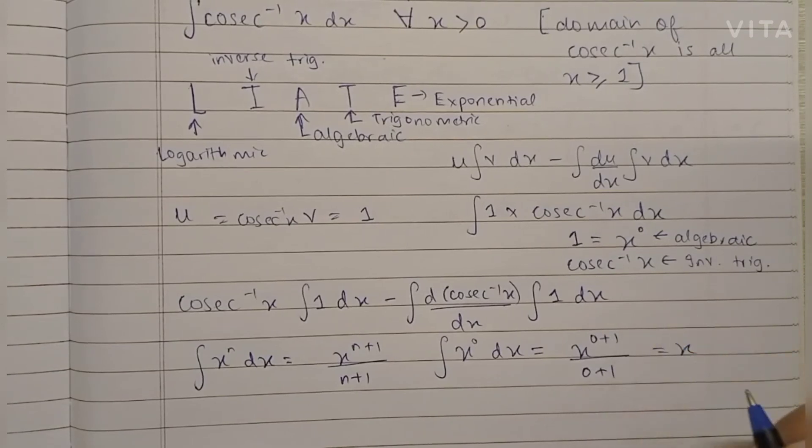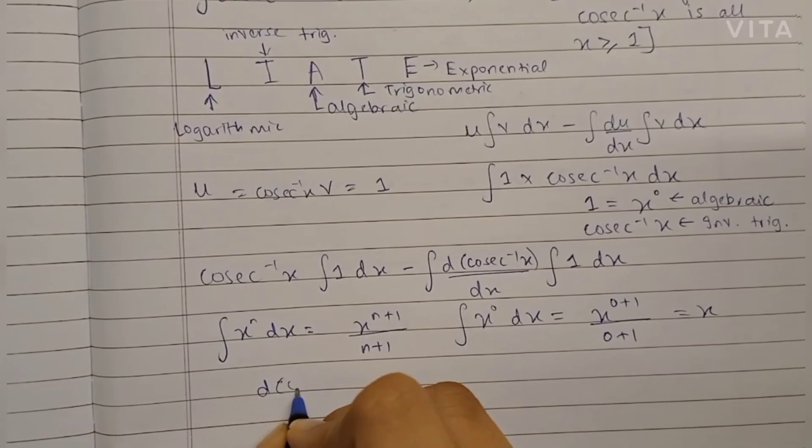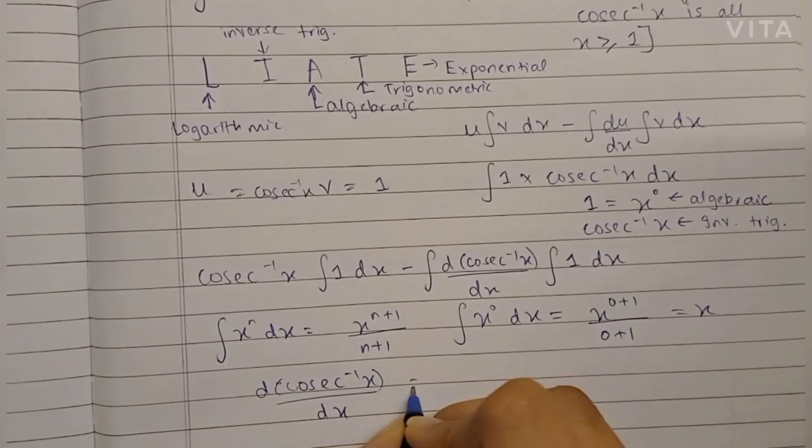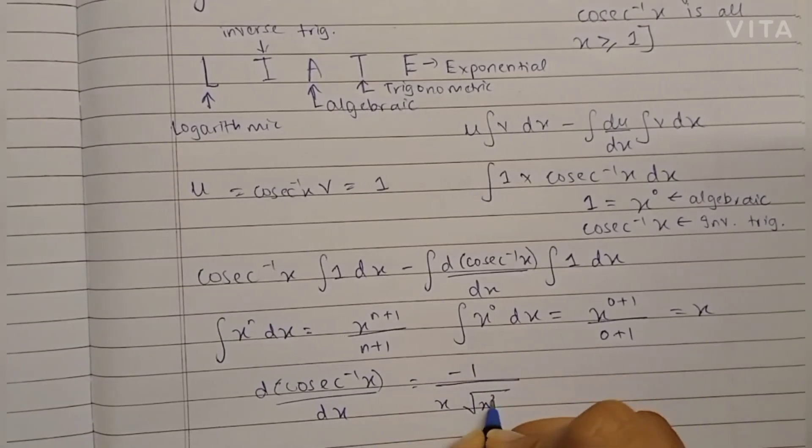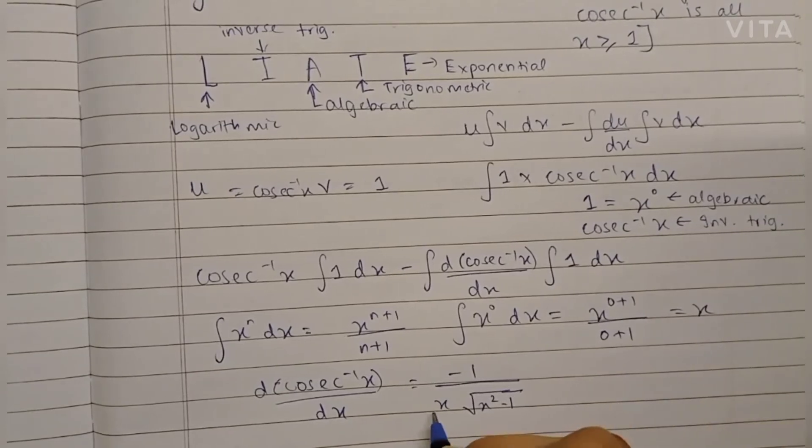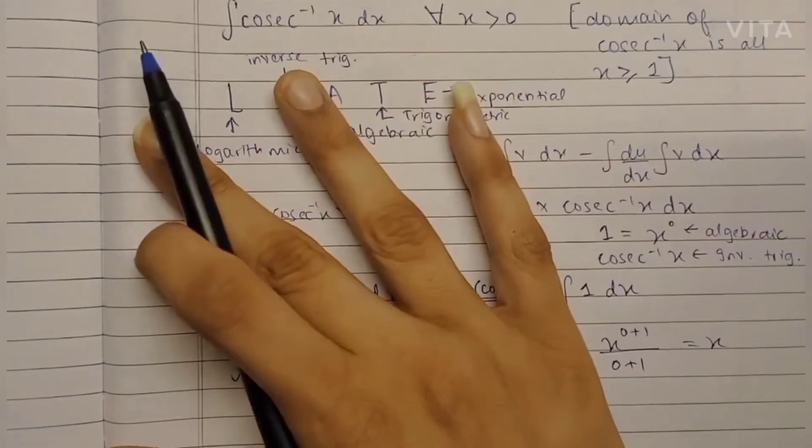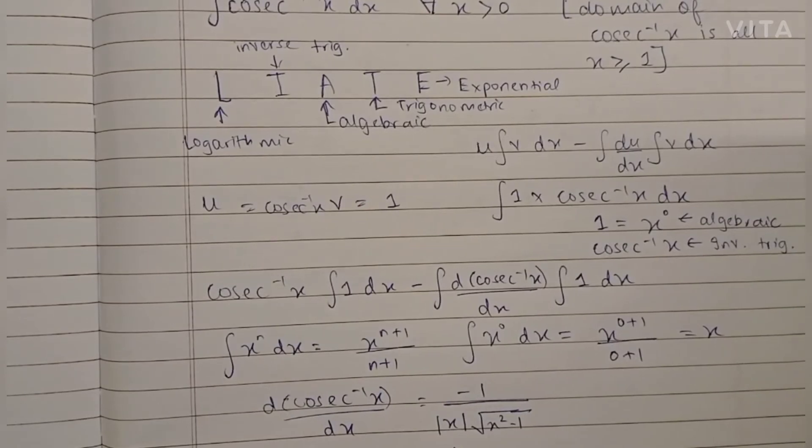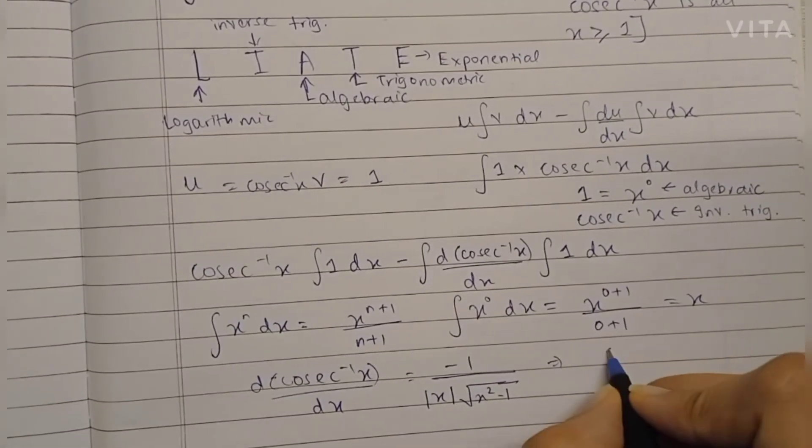Now the differentiation of cosec⁻¹(x) is minus 1 upon x√(x² - 1). Ideally we are supposed to have a mod sign next to the x over here, but because we already know that x is greater than 0 as given in the question, we won't need a mod sign here because it's all positive numbers already. So we will write it as minus 1 upon x√(x² - 1).